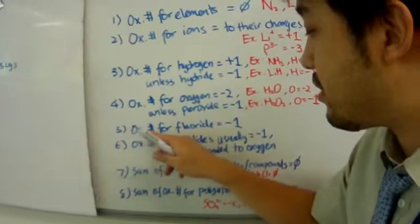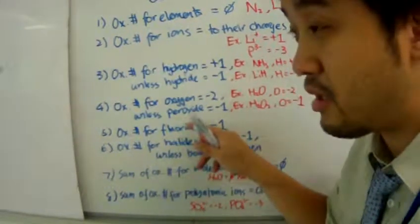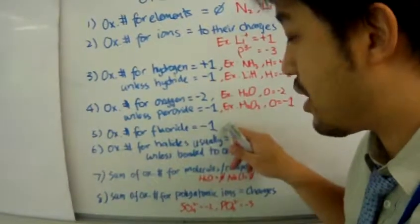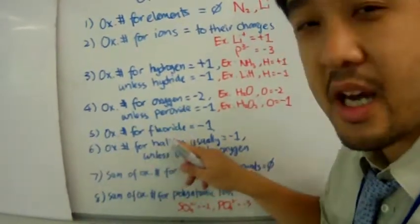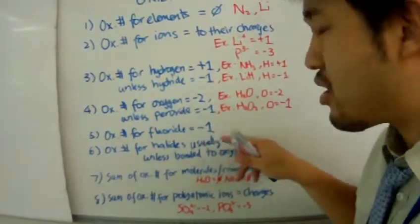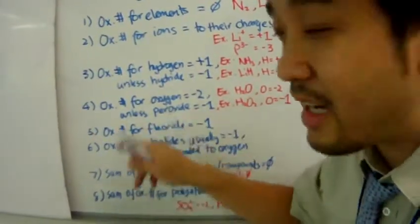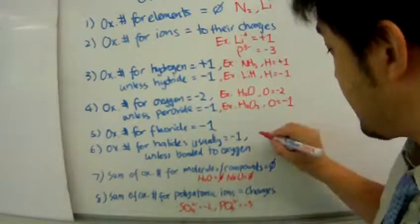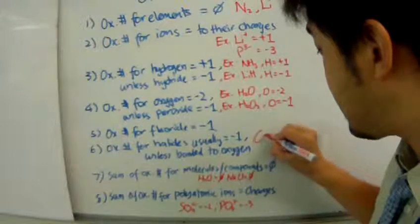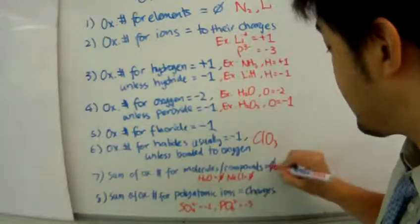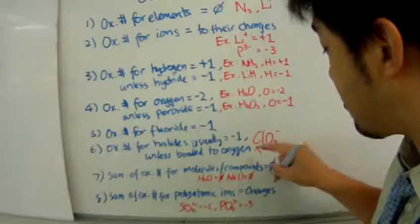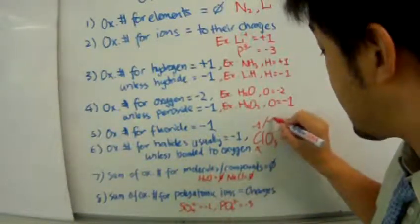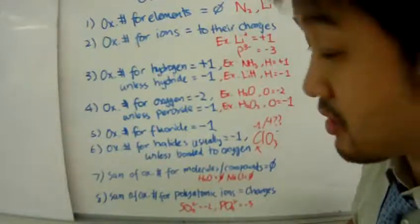The oxidation number for fluorine in a molecule or compound is always minus one. The oxidation numbers for any other halogens or halides are usually minus one, unless that halogen or halide is bonded to an oxygen. For example, ClO₃⁻ — the chlorine in here is no longer a minus one charge; it's something else, which we will figure out a little later.